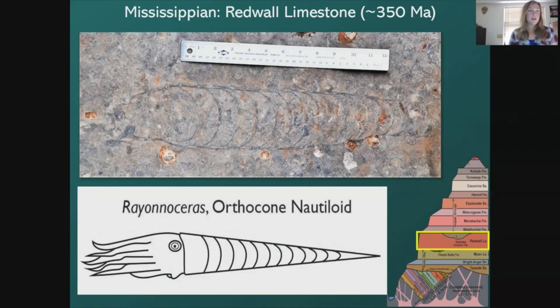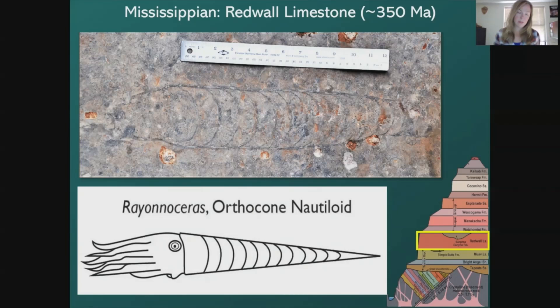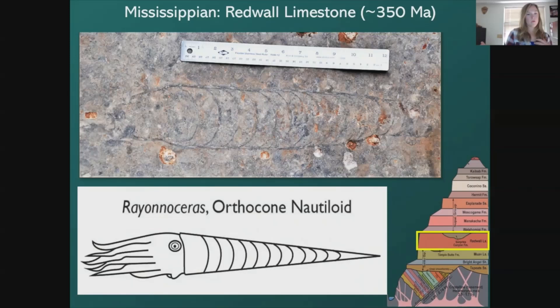Here's another interesting fossil — nautiloids, but these are quite rare because they are orthoconic, meaning long and straight, unlike the typical coiled nautiloid. Each chamber separated by septa is made of calcium carbonate and was used to control the buoyancy of the creature, allowing it to float through the water and catch prey with its tentacles. It could even move fast or slow depending on how it moved water versus air within its chambers. The fossil we find in the Redwall is quite large — you can see it next to a regular ruler.